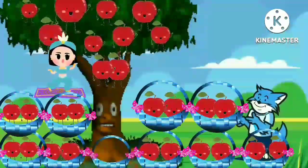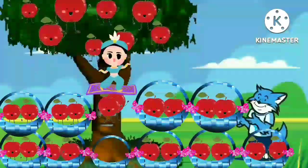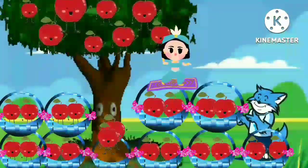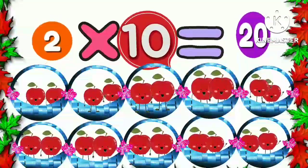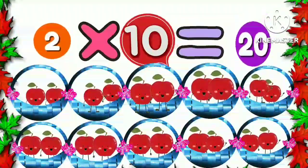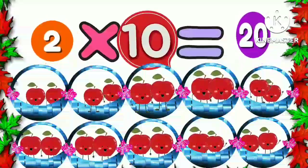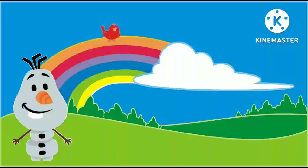The princess cut off two more apples. The apples fell into the tenth basket. Now we have two apples each in the tenth basket. Two ten times is twenty. This is the never ending story of table two.